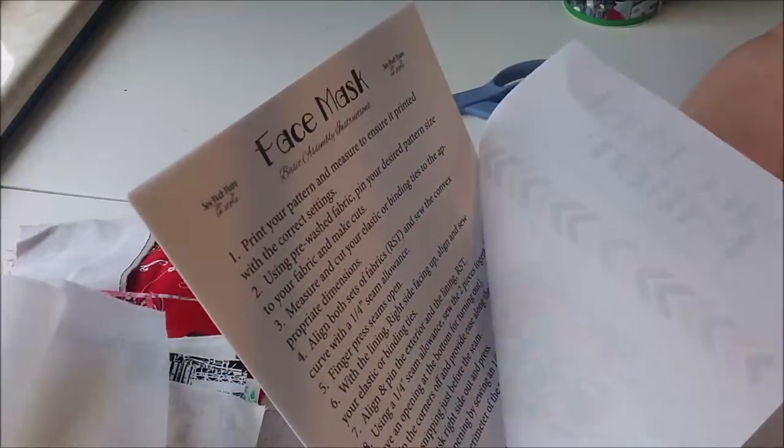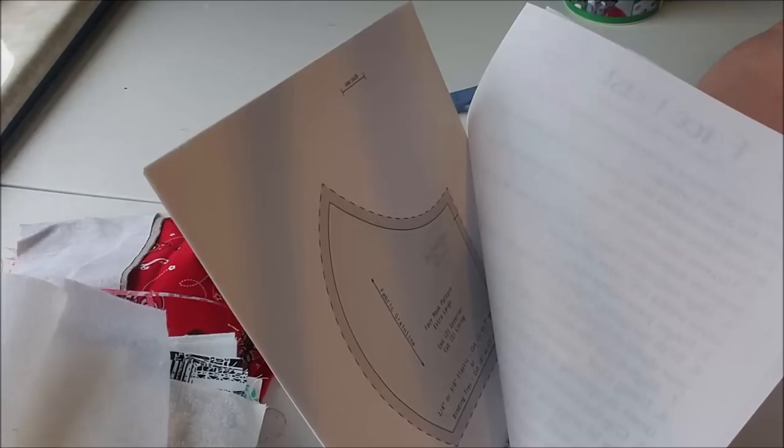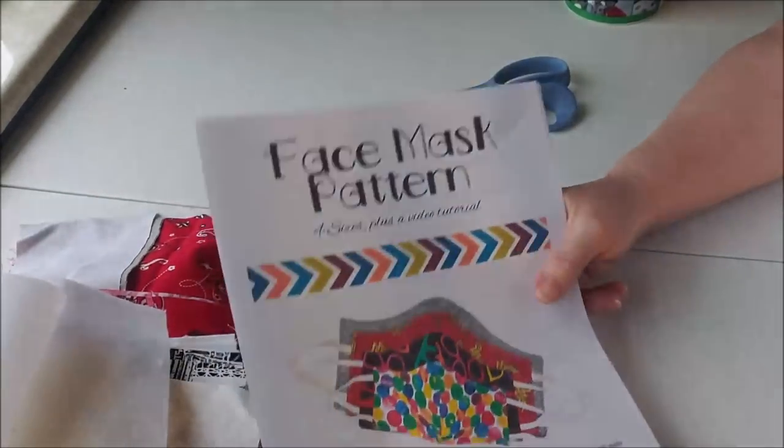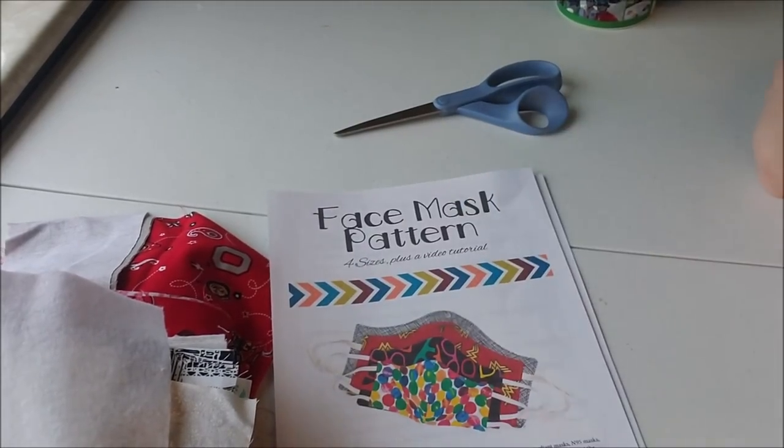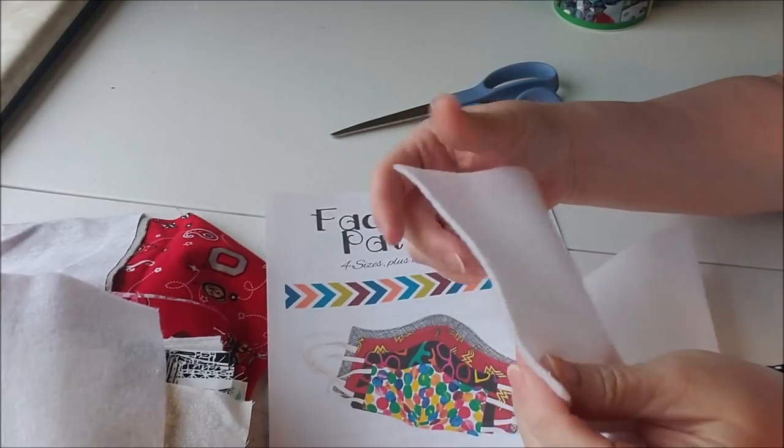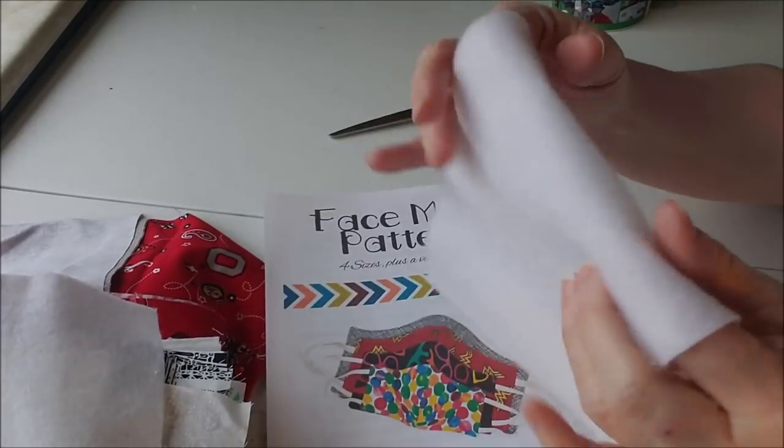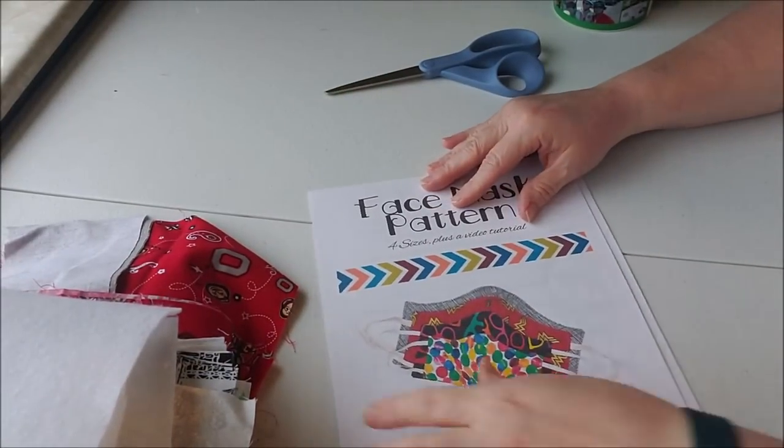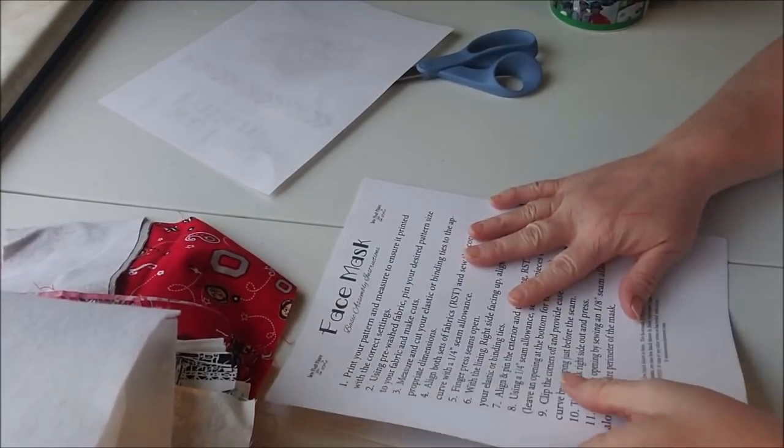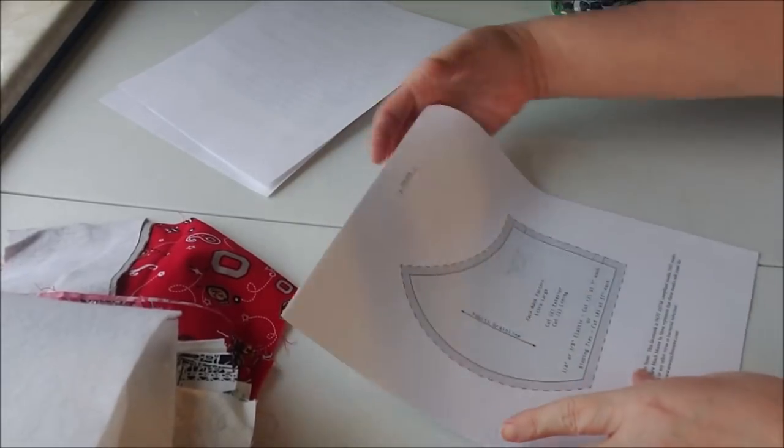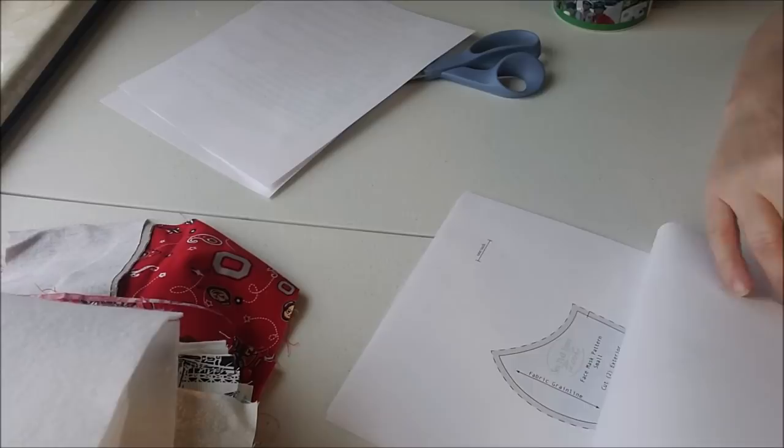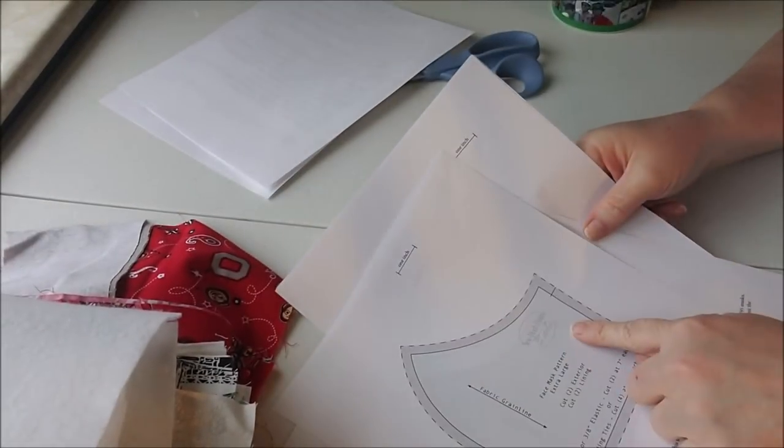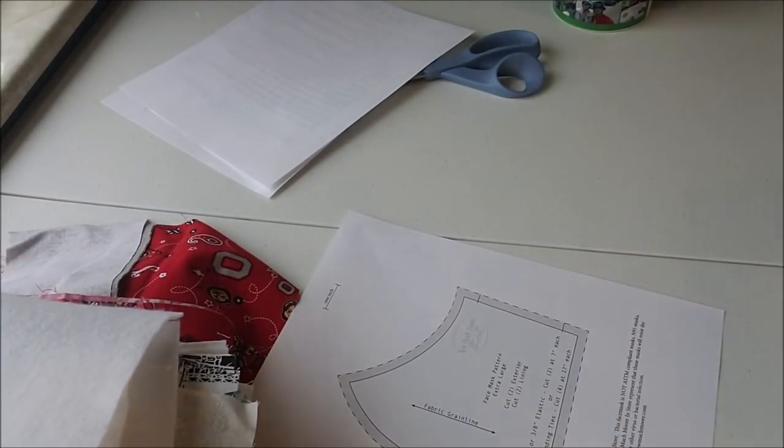So, I printed this pattern. I'm not going to make this one with a filter pocket because I don't really have anything to filter. So, we're just going to make it out of what I have. But I do have this fusible fleece. I have no idea what this is going to do, safety-wise, but it's another layer. So, we're going to try with that, which is not in these directions, and you don't have to have it. I just happen to have it, so we're going to use it.